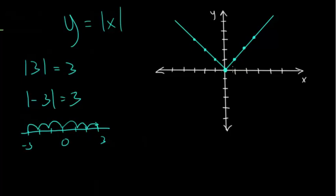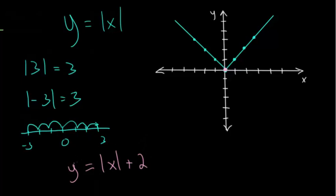We're curious how do we shift this around. Essentially, we're just going to be following this vertex point — this corner. Let's consider what happens if we add two to the parent function on the outside, not within the absolute value but outside of it. All of our y values are going to be two points higher compared to the parent function. If you plug in zero, you just get two.